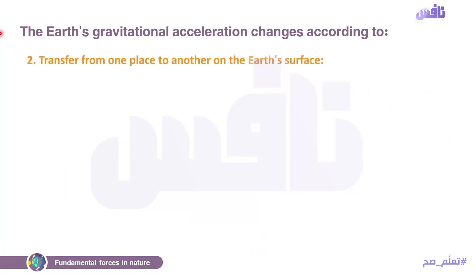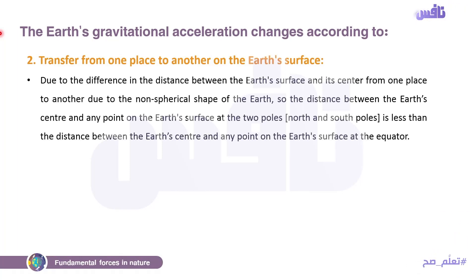Number two: transfer from one place to another on earth's surface. يعني أنا مثلاً في دولة معينة هيبقى ليه weight، في دولة تانية هيبقى ليه weight تاني — due to the difference in the distance between the earth's surface and its center from one place to another, due to the non-spherical shape of the earth. الأرض ليها شكل oval، so the distance between the earth's center and the two poles is less than the distance at the equator.